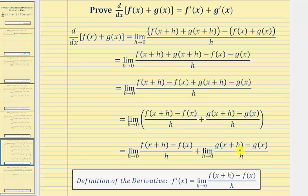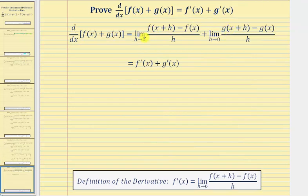And now we should recognize that these limits are the definitions of the derivative — here for f prime of x, and here for g prime of x. And therefore we have our proof: this is equal to f prime of x plus g prime of x. So we've now proven the derivative of f of x plus g of x with respect to x equals f prime of x plus g prime of x. I hope you found this helpful.